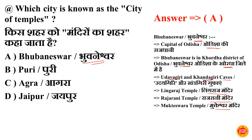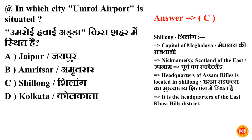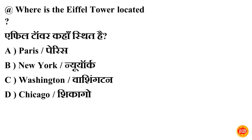Next question: in which city is Umroi Airport situated? Umroi hawa adda kis shahar mein sthit hai? Option C is correct — Shillong. Meghalaya ki capital hai Shillong. Shillong ko 'Scotland of the East' bhi kaha jata hai. ASAMBRA efls ke headquarters Shillong mein sthit hain.